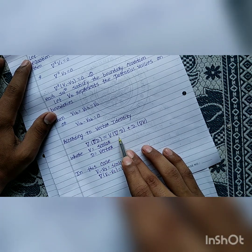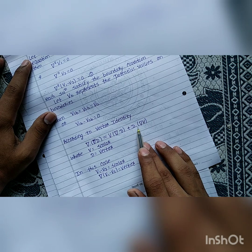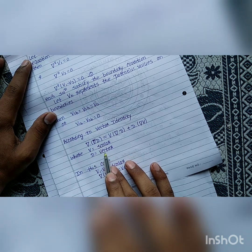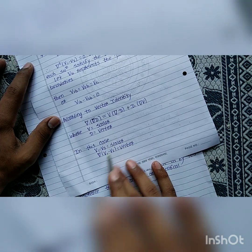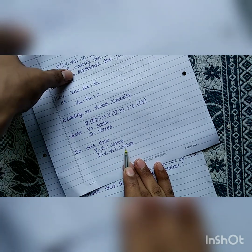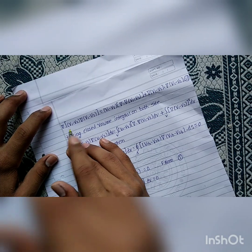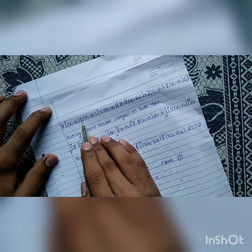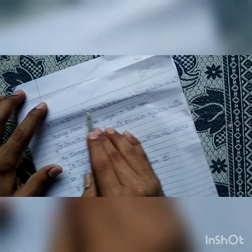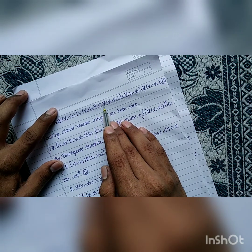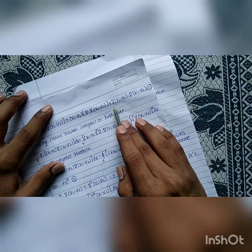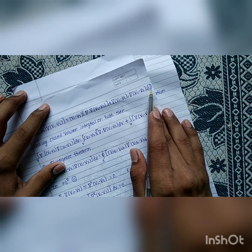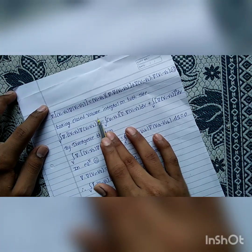We know the vector identity: del dot (v times d) is equal to v times (del dot d) plus d dot (del v), where v stands for a scalar and d stands for a vector. In this case, (v1 minus v2) is the scalar and del(v1 minus v2) is the vector. So we apply the vector identity: del dot [(v1 minus v2) times gradient of (v1 minus v2)] is equal to (v1 minus v2) times del dot del(v1 minus v2) plus del(v1 minus v2) dot del(v1 minus v2).